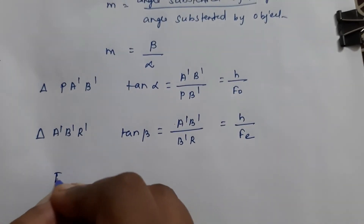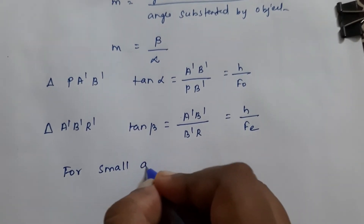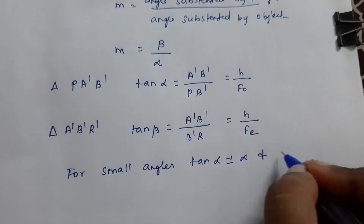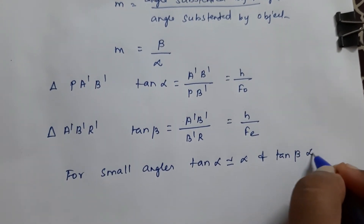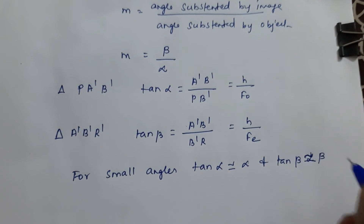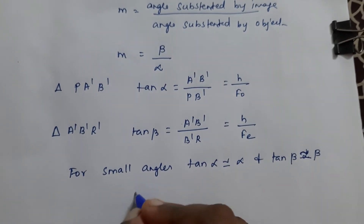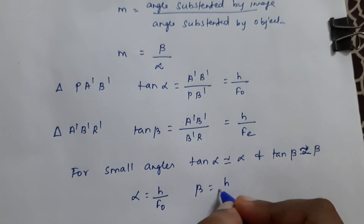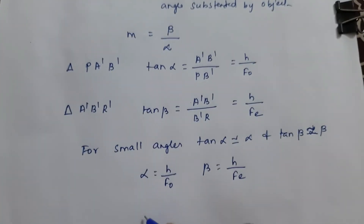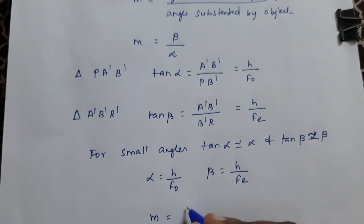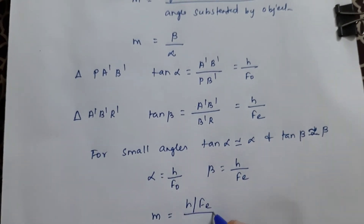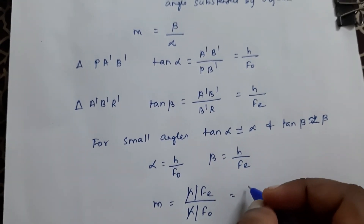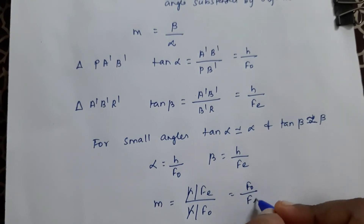For small angles, tan alpha is approximated as alpha and tan beta is approximated as beta. So alpha = H / F_O and beta = H / F_E. Therefore magnification M = beta / alpha = (H / F_E) / (H / F_O). H cancels, giving M = F_O / F_E — that is, focal length of objective divided by focal length of eyepiece.